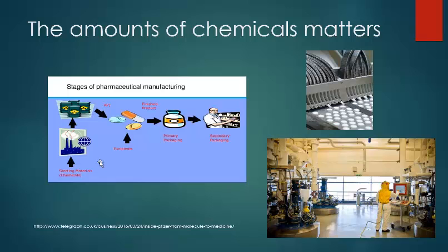The amounts of chemicals really matter. Here's an example — a graphic of the stages of pharmaceutical manufacturing. These manufacturers need to know exactly how much starting material they need for a particular amount of product. Here's the finished product — pills — and here's a graphic of the Pfizer manufacturing plant in England. Knowing how much starting material you need to give the finished product is a very important part of the manufacturing process.